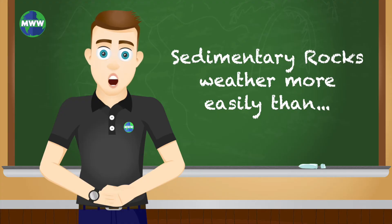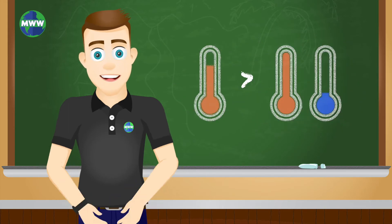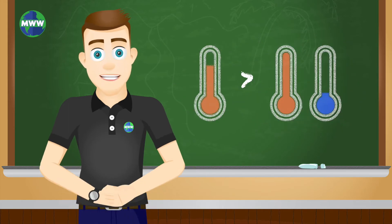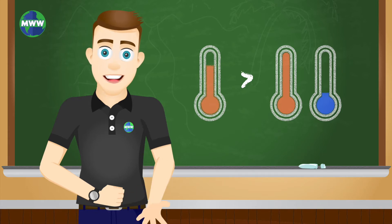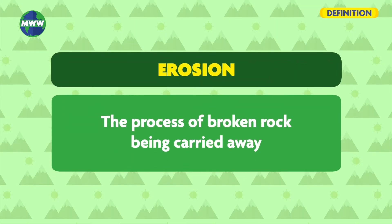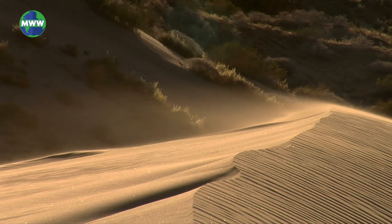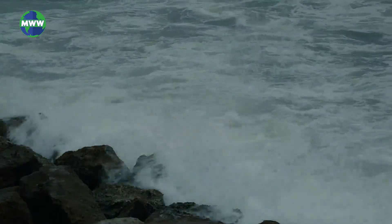Sedimentary rocks weather more easily than metamorphic and igneous rocks. Depending on a location's climate, if it's warm and humid, weathering occurs quicker than places where it is very hot or cold. Weathering destroys rocks, and erosion is the process of carrying the broken pieces of rock and sediment away. This is caused by ice, wind, water, or gravity.